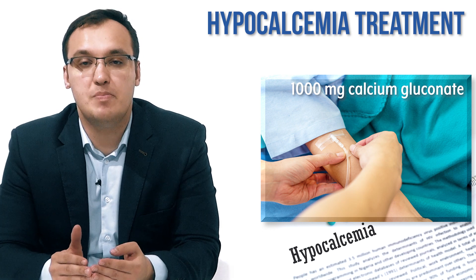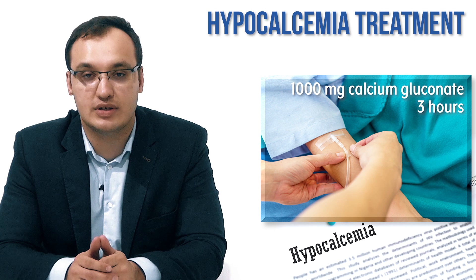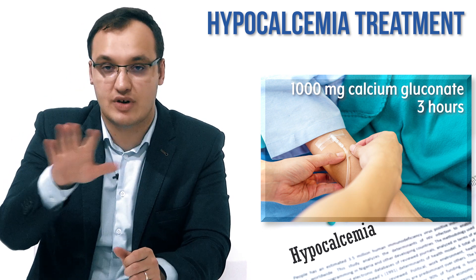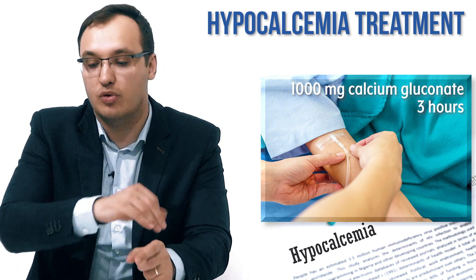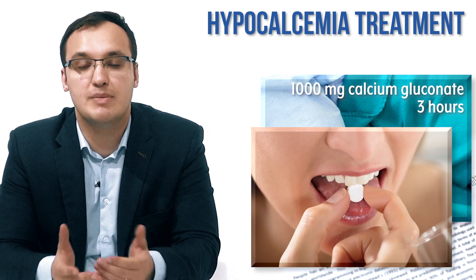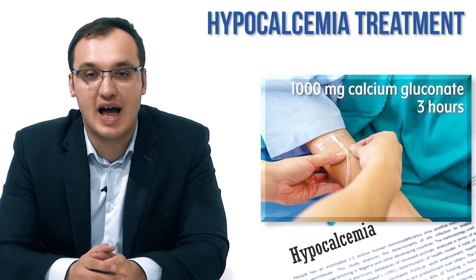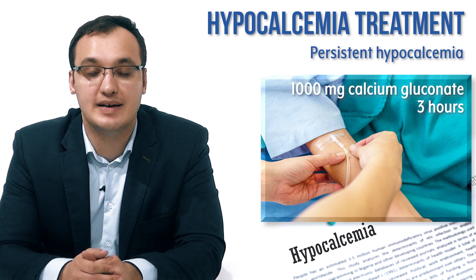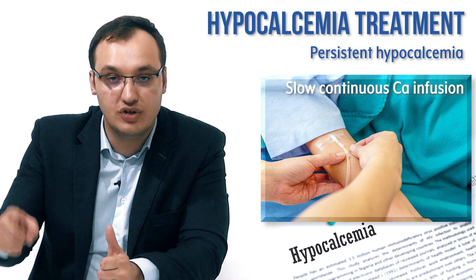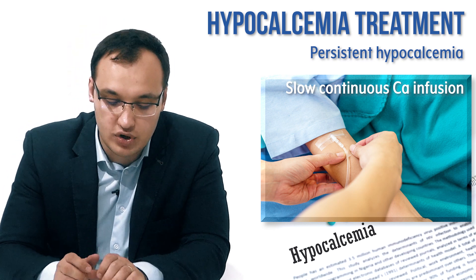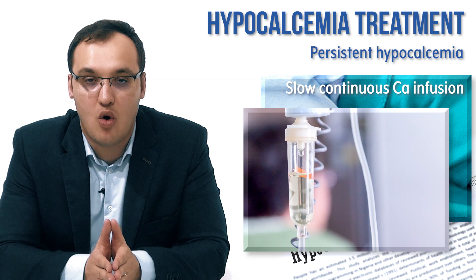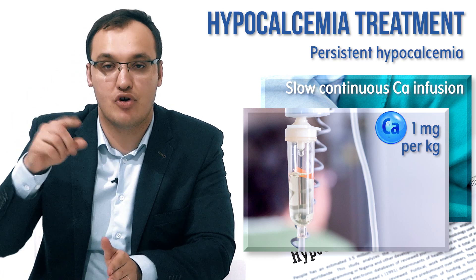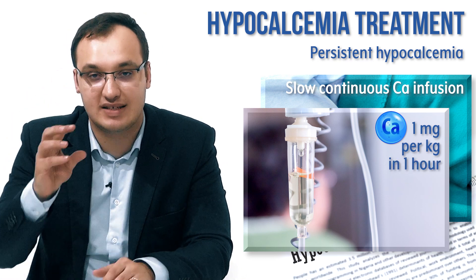The calcium level should increase around 3 hours after the initial dose. Some patients will then have a stable calcium level, meaning we can stop the intravenous infusion and switch them to oral tablet form instead. But for patients who still have persistent hypocalcemia — a persistently low level of calcium — after those three hours, we need to start a slow, continuous infusion of calcium at 1 milligram of elemental calcium per kilogram of body weight per hour.